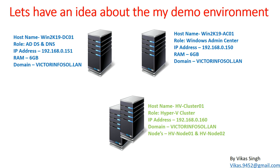This is the infrastructure I'm going to use in this demo. The first machine is our Active Directory and DNS server — win2k19dc01 — with the Active Directory and DNS role. The IP address of this machine is 192.168.0.151, memory assigned is 6GB, and my domain name is vectorinfosol.lan.